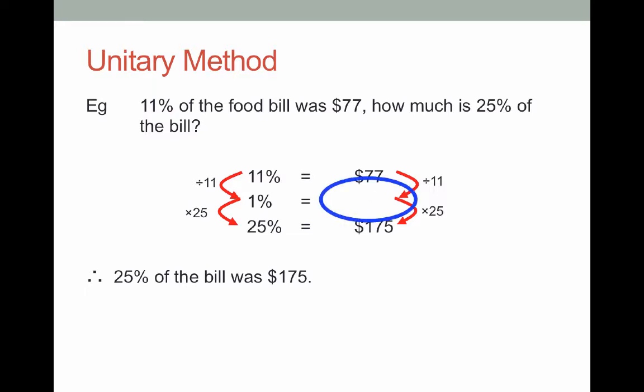This middle part, the actual answer to what 1% is, is not really necessary. We don't need to work it out. If this turns out to be a really bad decimal, something that's really long, it's unnecessary to write down. As long as you start with $77, divide by 11, and then times by 25, that's going to end up with your 25% of your amount.